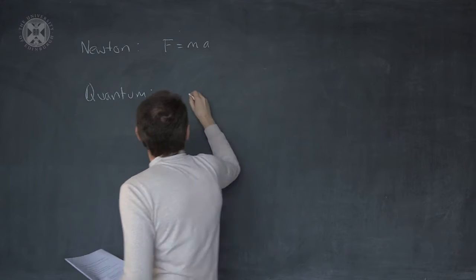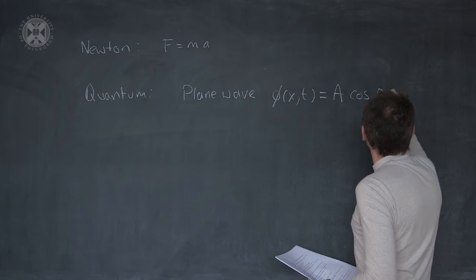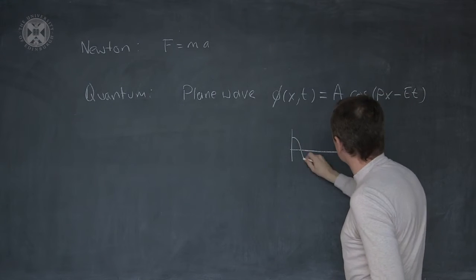At the quantum level, particles are described by ripples in fields. We have plane waves.